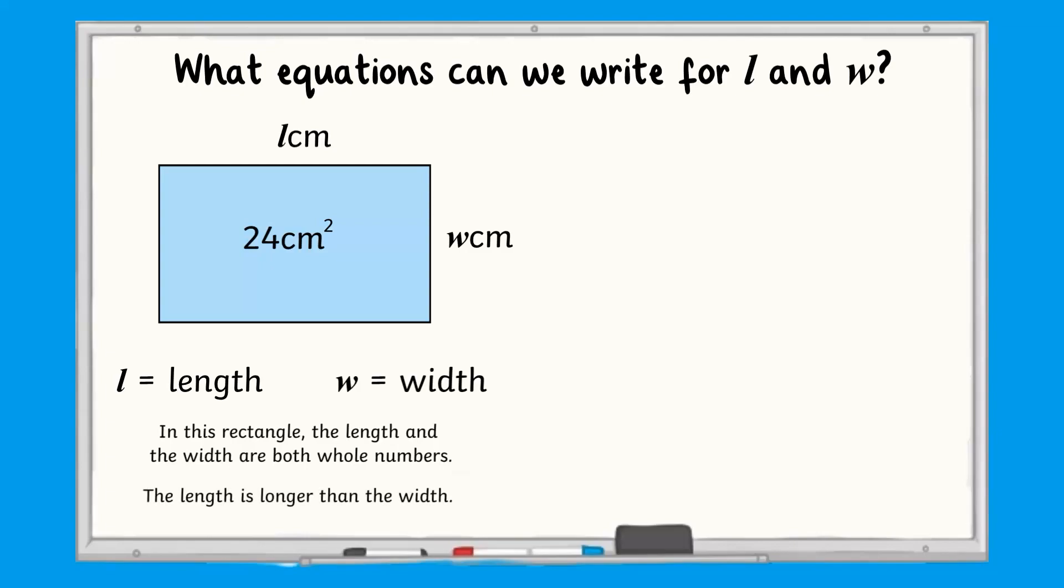What equations can we write for l and w? We know that to find the area of a rectangle, we multiply the length and width. Therefore, l multiplied by w must equal 24. We also know that for this rectangle, the length is longer than the width, so l is greater than w.